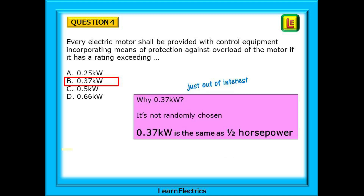But why is it 0.37 kilowatts? This number has not been randomly chosen — 0.37 kilowatts is the same as a half-horsepower motor.